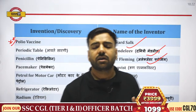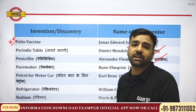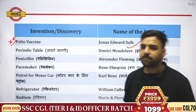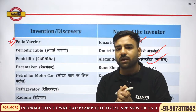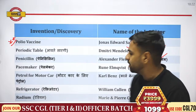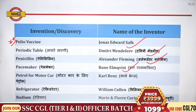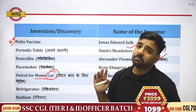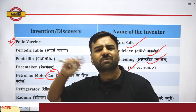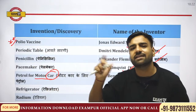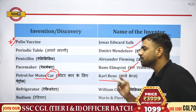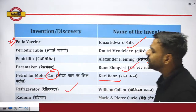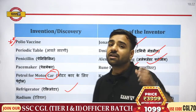Penicillin was discovered by Alexander Fleming. Pacemaker — in our heart there is a natural pacemaker that regulates blood circulation. If the natural pacemaker doesn't work, an artificial pacemaker is used, which was discovered by Reune. Petrol for motor cars — we all dream of a Mercedes, so from Mercedes Benz remember Carl Benz, who discovered petrol for motor cars.